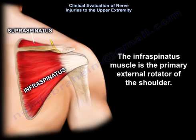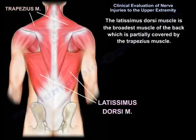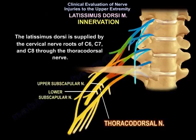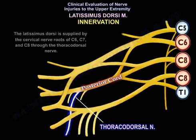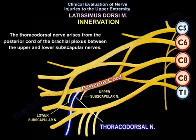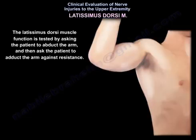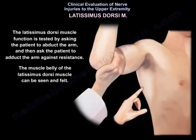The infraspinatus muscle is the primary external rotator of the shoulder. The latissimus dorsi is the broadest muscle of the back, partially covered by the trapezius muscle. It is supplied by C6, C7, and C8 through the thoracodorsal nerve, which arises from the posterior cord of the brachial plexus between the upper and lower subscapular nerves. Its function is tested by having the patient adduct the arm against resistance, palpating the muscle belly.